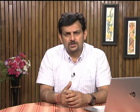IND-CAT has been very helpful to researchers who want to travel to certain universities to identify and access a book. If a particular book is not available in their library, they can figure out which library has it and plan their visit, saving time and effort in getting the content in the shortest time. Users can also browse the union database alphabetically by subject category, by name of the university, or chronologically.